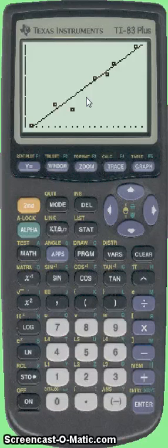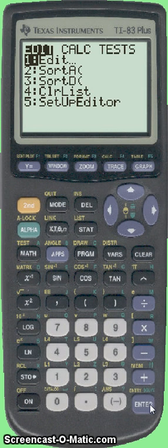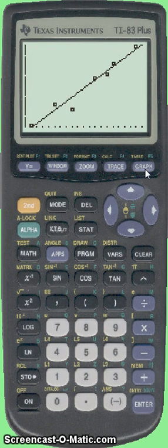And the thing we can do with this line is we can predict things about what the data will look like at different values of x. So remember that this data was saying that for this body length of a bird, we'll see this wingspan, right? And if we look at that data, if you have a body length of 16, then we'll have a wingspan of 41. Well, what about a wingspan of 17? That's what we use these lines of best fit for.